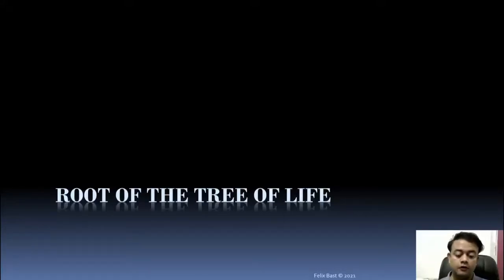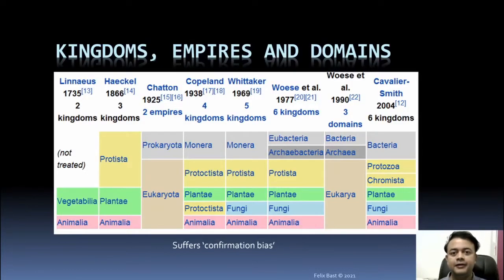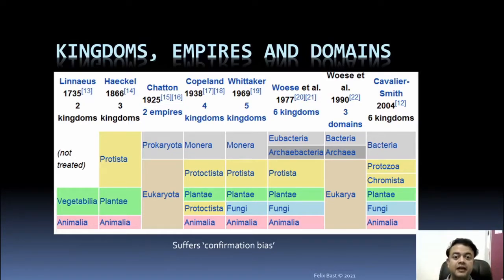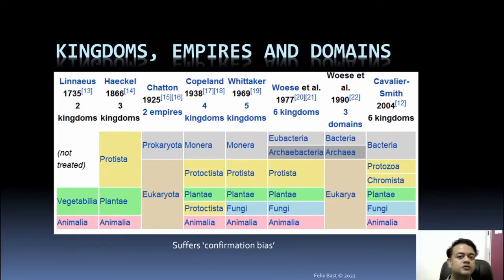The root of the tree of life — the tree of life is a concept by Darwin, and it is a core of taxonomy. You can see the tree of life and how the major kingdoms, domains, and empires are arranged. This keeps changing with new systems of classification whenever they are published.